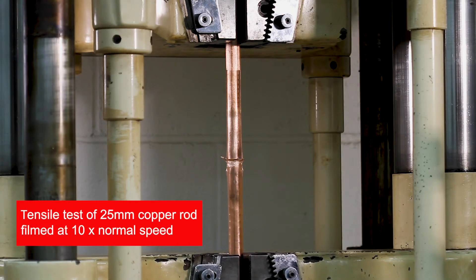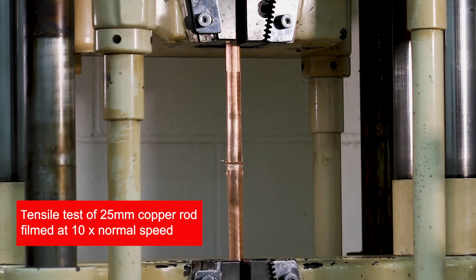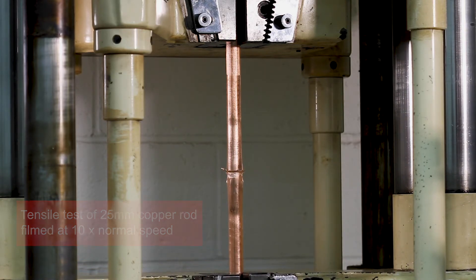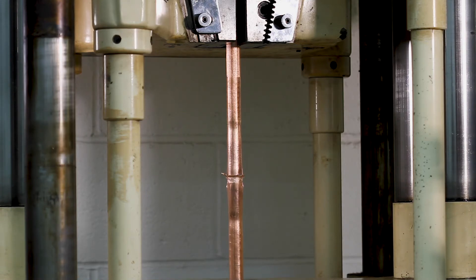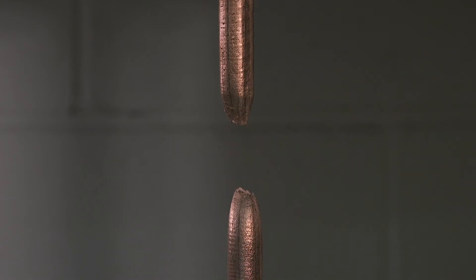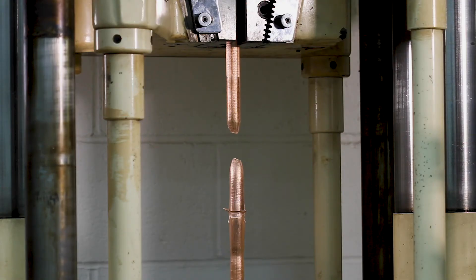When the weld strength is checked, even sections of material as large as 25 mm in diameter will not break at the weld area. Although the cold welded material gradually stretches and becomes thinner and eventually breaks, the weld remains intact because it's stronger than the parent material.